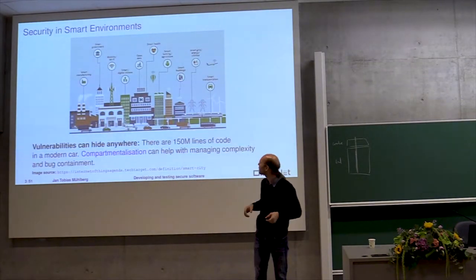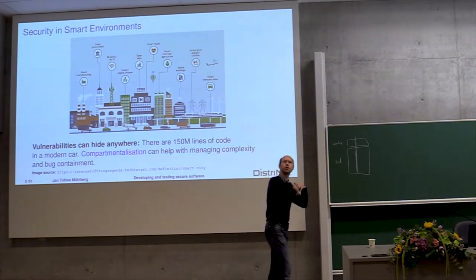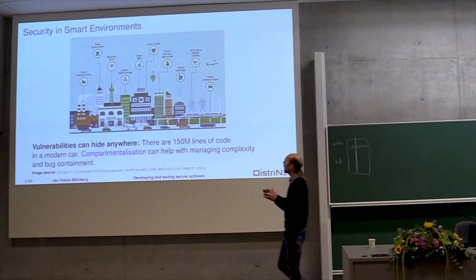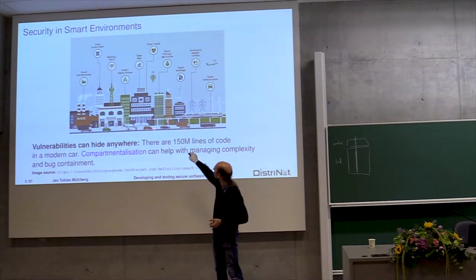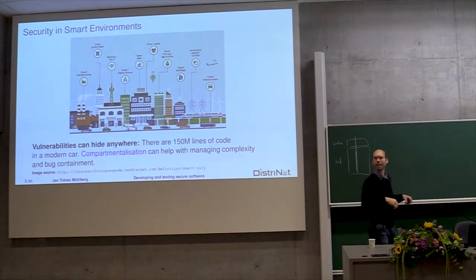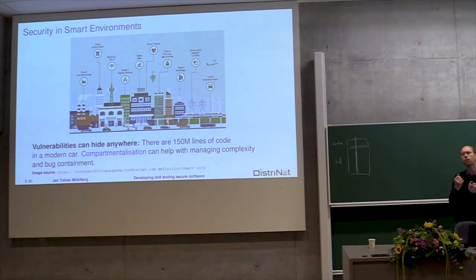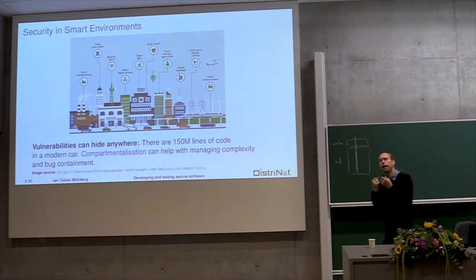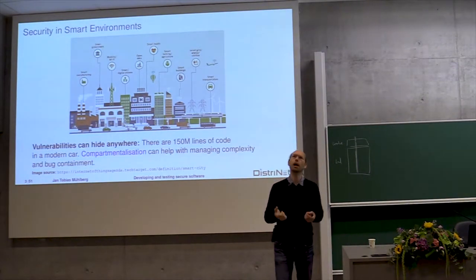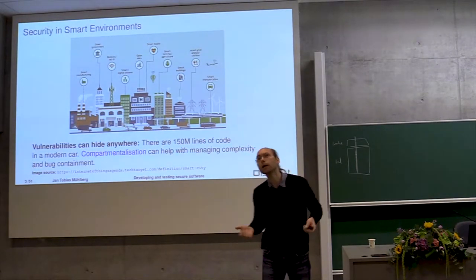We build these kind of environments these days, and they are huge in terms of software that is involved. If you just think about a tiny little object like a car — a modern car consists of 150 million lines of source code. How do you ever make sure that there are no bugs left in these systems that lead to huge problems for society?